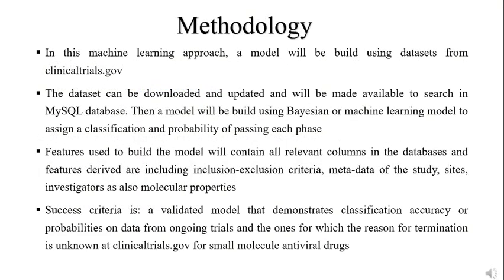Methodology: In this machine learning approach, a model will be built using datasets from clinicaltrials.gov. The datasets can be downloaded and updated and should be made available to search in a MySQL database. A model needs to be built using a Bayesian or machine learning approach to assign a classification and probability of passing each phase. Features used to build the model should contain all relevant columns in the database, and derived features should include inclusion-exclusion criteria, metadata of the study, sites, investigators, and molecular properties.